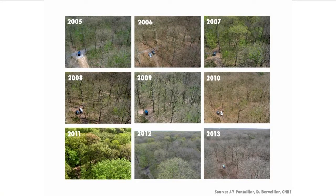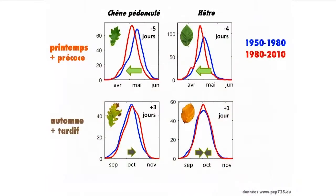In the warmest springs, such as 2007 and 2011, the leaves grow more precociously, and warm autumns are associated with a later shedding of leaves. This ability to follow changes in temperature also appears in the longer term. For the oak and the beech, leaves appear earlier in the recent period from 1980 to 2010, as compared to the period between 1915 and 1980.